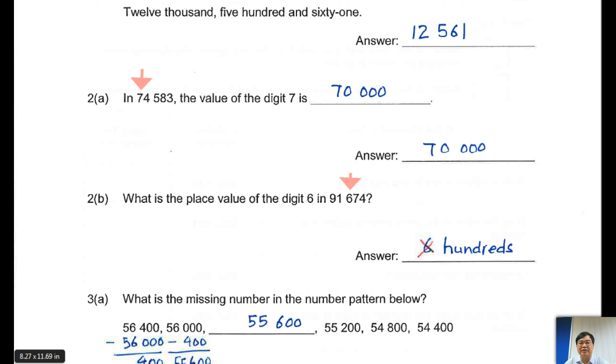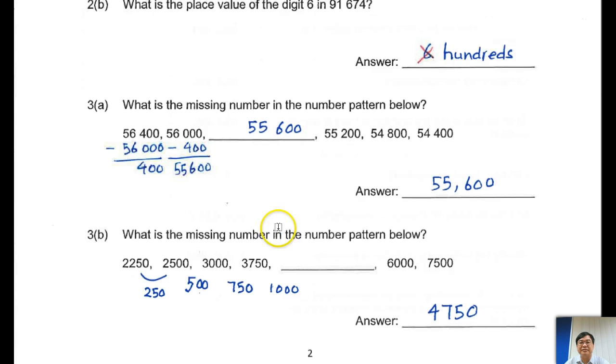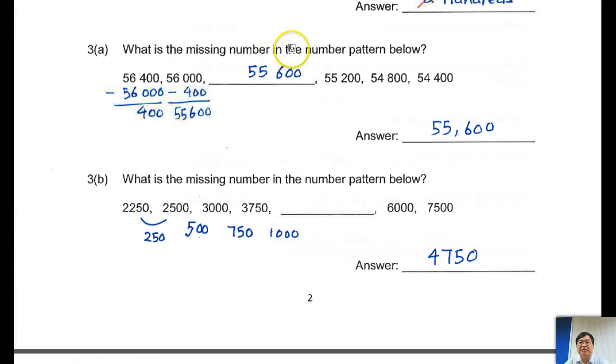Next, let's carry on. 3A, what is the missing number in the number pattern below? Over here, easy. Now, of course, you may copy the answer, but I want you to really be serious when you're doing examination. Right over here, take a look. Take one of this number, the larger number, minus the smaller number. Then you get the difference. For me, this I double-check. I just double-check over here, and I get this answer. See whether the difference between this and this is 400. Just double-check. And of course, here should be 400, and it says 400. Answer 55,600.